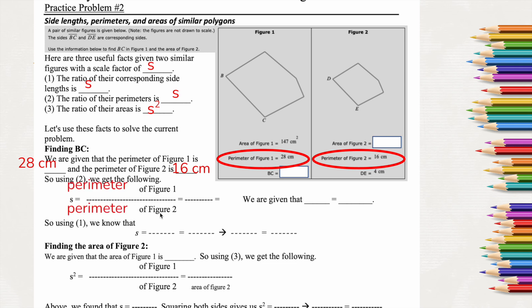So we're going to do the perimeter of figure 1 over the perimeter of figure 2. So that's 28 over 16, and we reduce that because they can both divide by 4. 28 divided by 4 is 7, and 16 divided by 4 is 4.